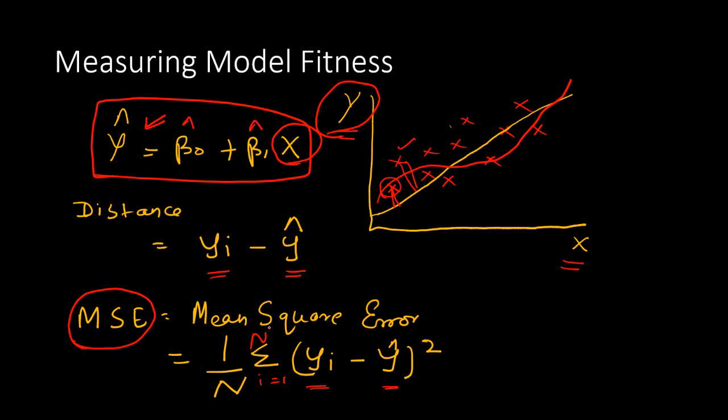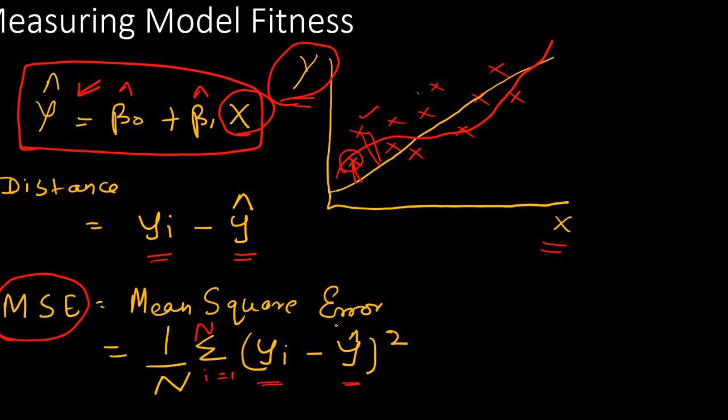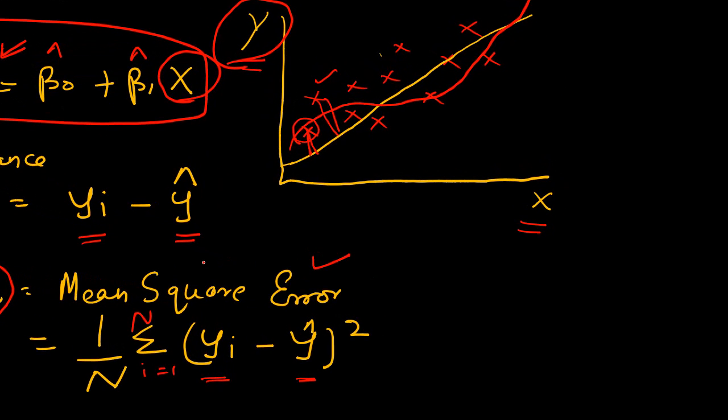In the definition, in the term itself, the definition lies. We calculate error, we square it, and we take the mean or average of that. And that's what is mean square error.